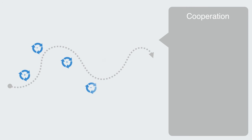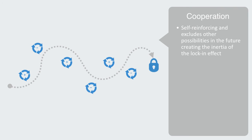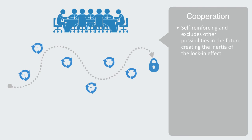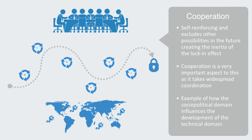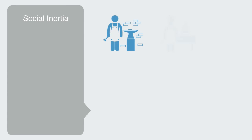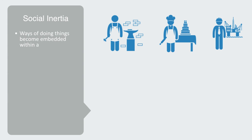All of these — positive feedback, the network effect, and negative externalities — mean that once we decide to go down a particular path, it is self-reinforcing and excludes other possibilities in the future, creating the inertia of the lock-in effect. Breaking out of this will require either greatly more efficient technology coming along, or very efficient organization for people to cooperate on changing to a better available solution. Cooperation is a very important aspect — it would take widespread cooperation to globally standardize the electrical plug or train track gauges. This is an example of how the socio-political domain influences the development of the technical domain.